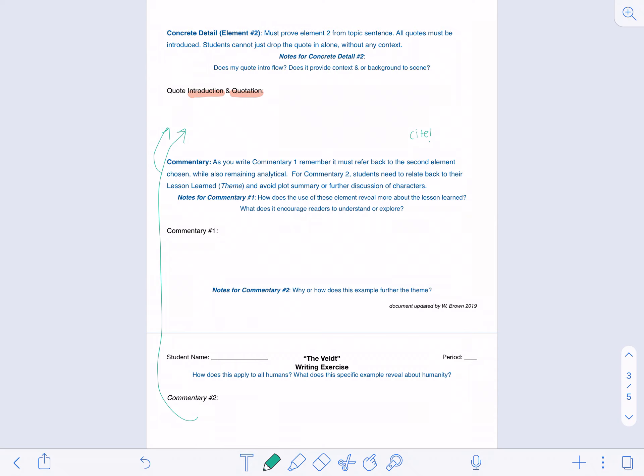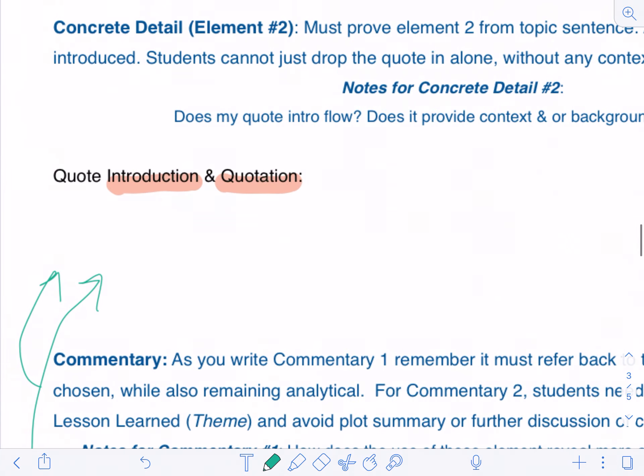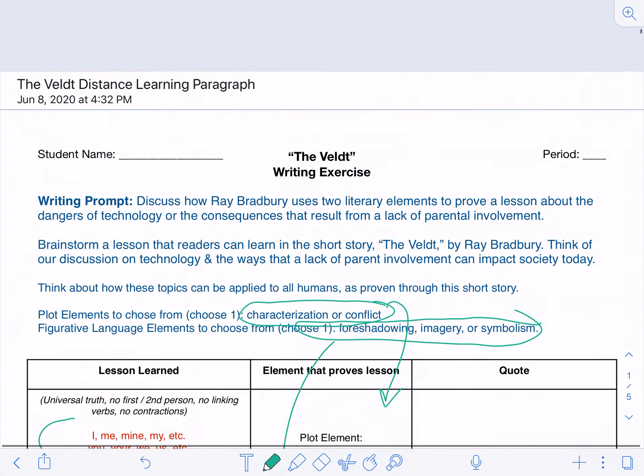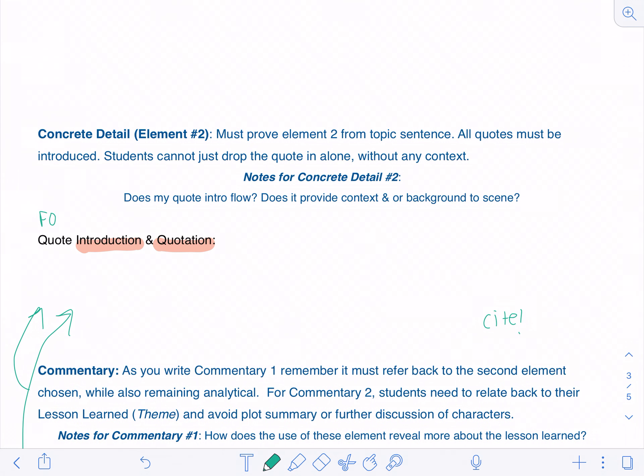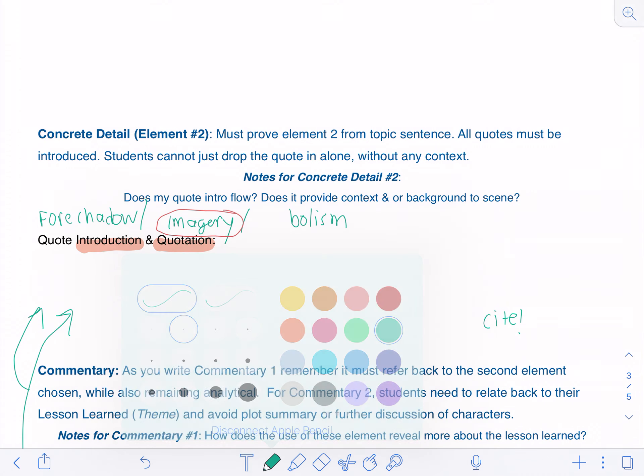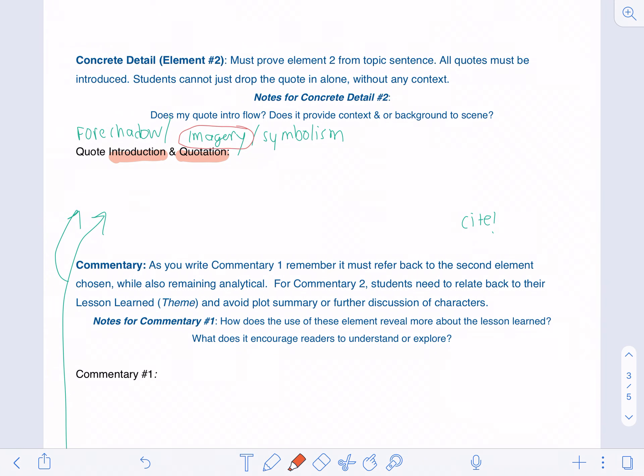So you repeat the same pattern that we just went over for commentary one and two under concrete detail one, for concrete detail number two. So now it's either—I believe let me double check which ones I listed for this story—foreshadowing, imagery, or symbolism. And so then you need to go in and circle which one you had chosen to write on.